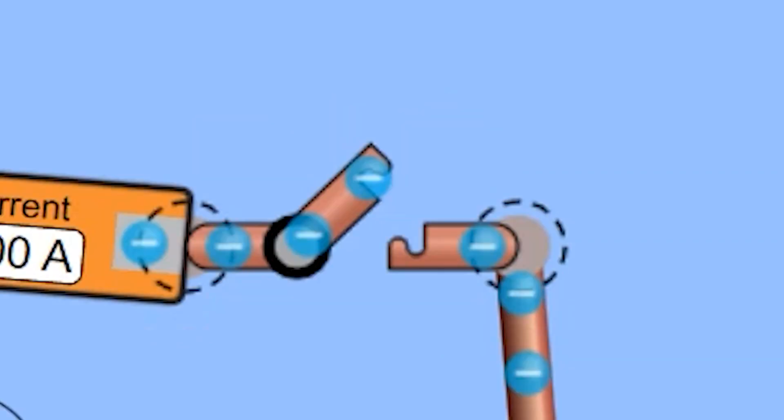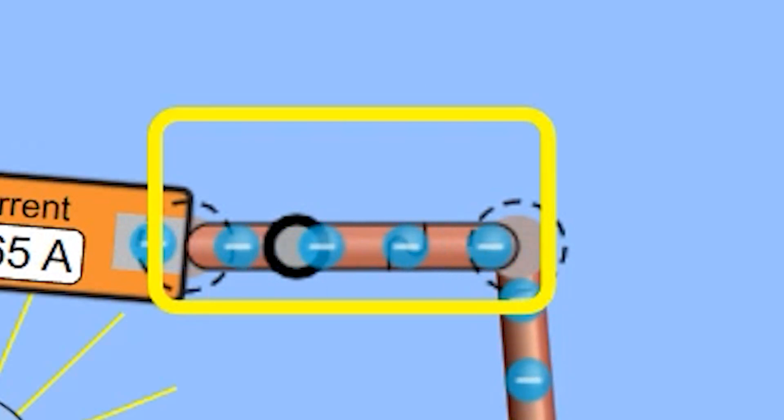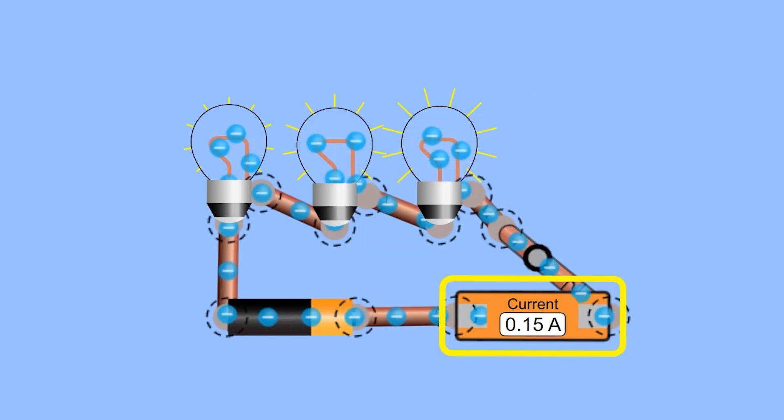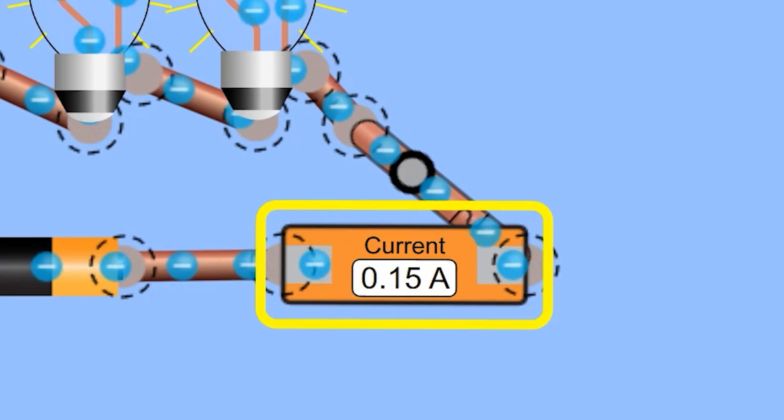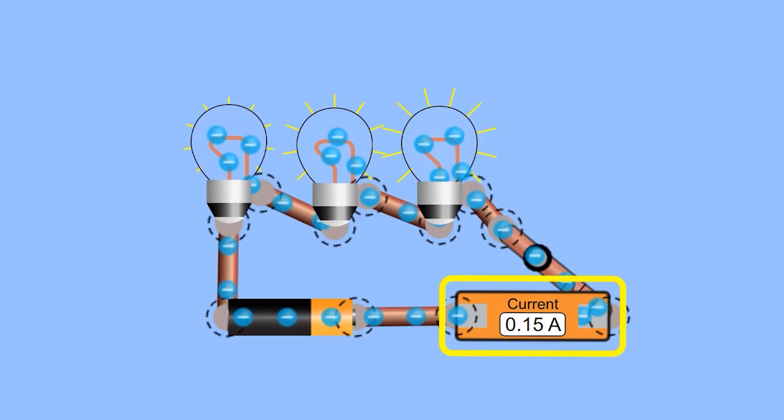Upon testing by closing the switch, this is confirmed. We can see how in a series circuit, the three light bulbs share the same current because the current has only one path to flow through.